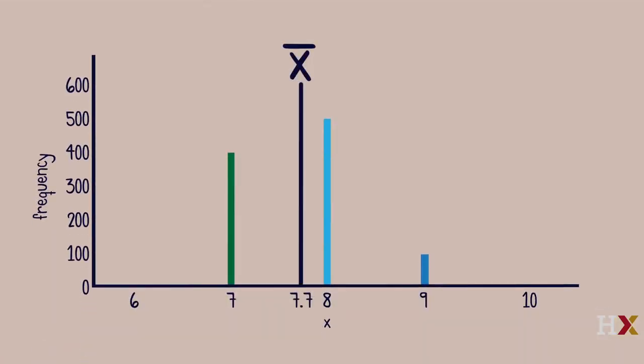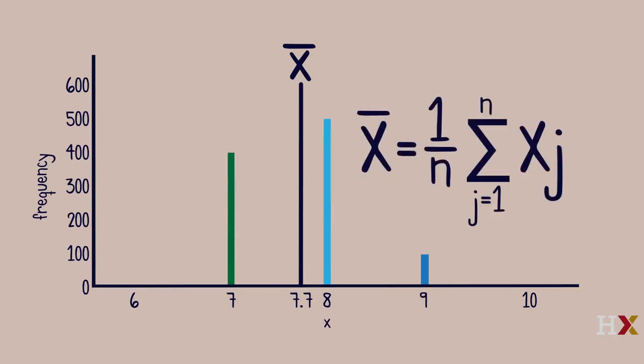The sample mean X bar of random variables X1 through Xn is their simple average, the sum of Xj's divided by n.